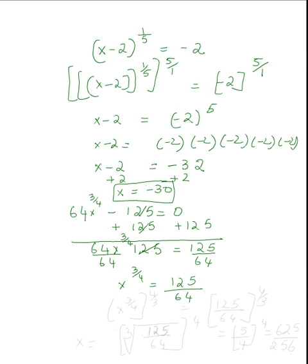Now we have x by itself. So what am I going to do? I'm going to raise this whole thing by four-thirds on both sides. And then I cancel this and I get my x by itself. What does that mean? Again, I'll get the cube root, because remember the three is in the denominator, of one twenty-five over sixty-four to the fourth.